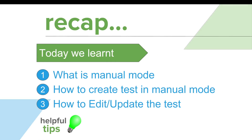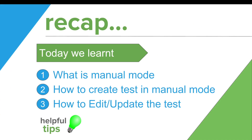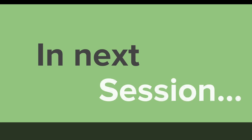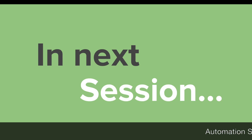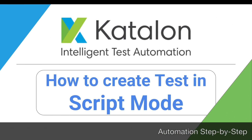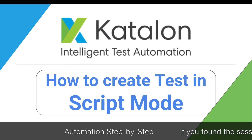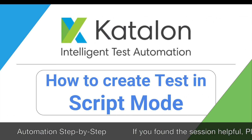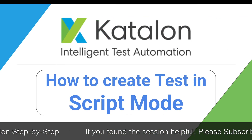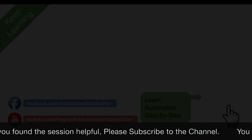Let us do a quick recap. In this session, we learned what manual mode is, how to create a test in manual mode, how to edit and update it, and we looked at some useful tips including failure handling options. In the next session, we are going to start with script mode and see exactly how to use script mode in Katalon Studio.